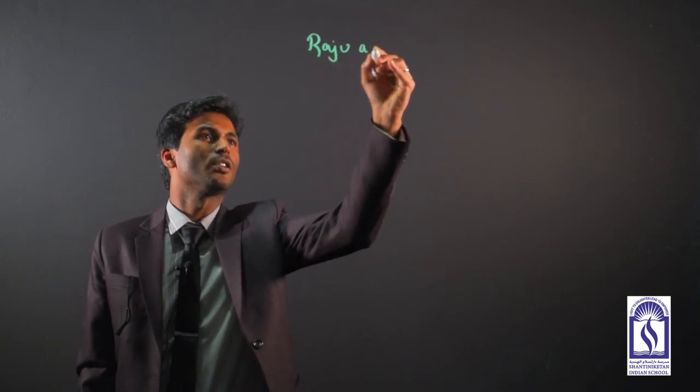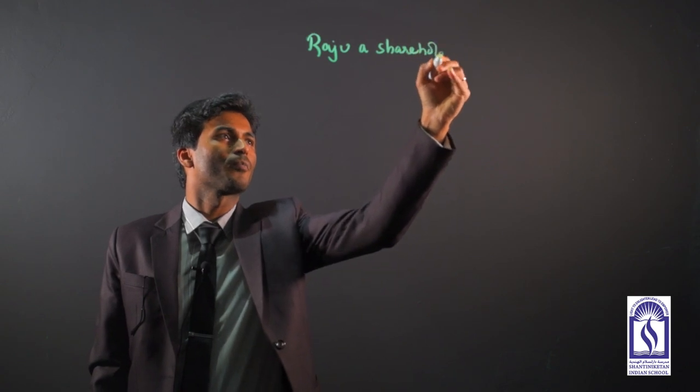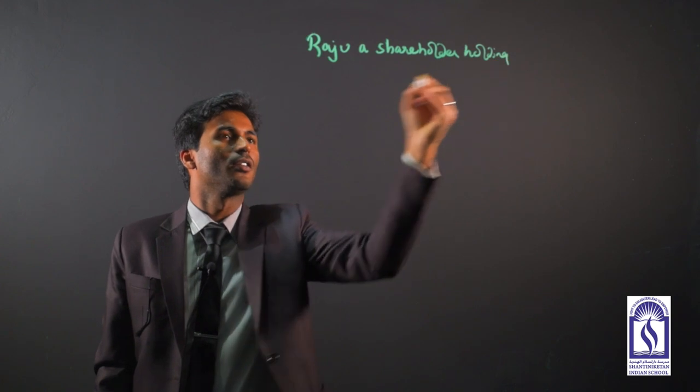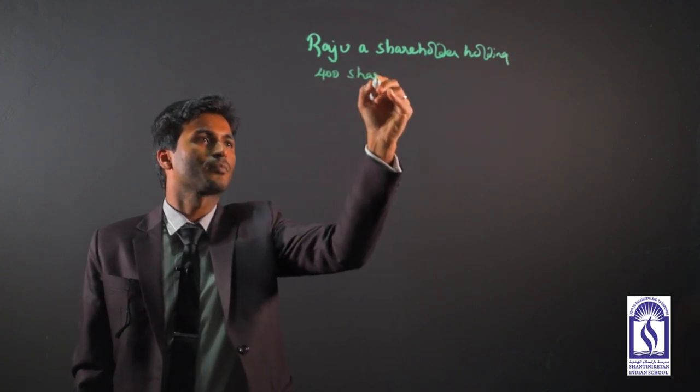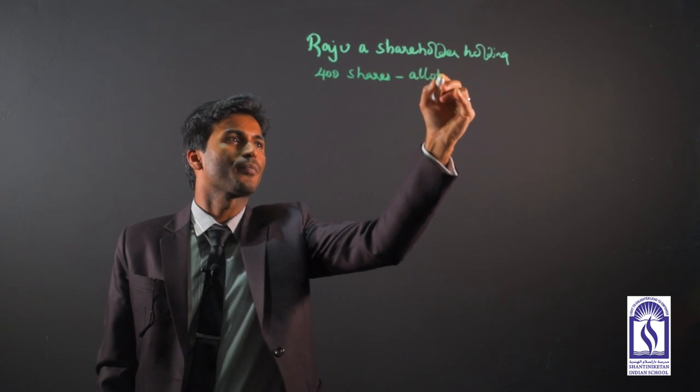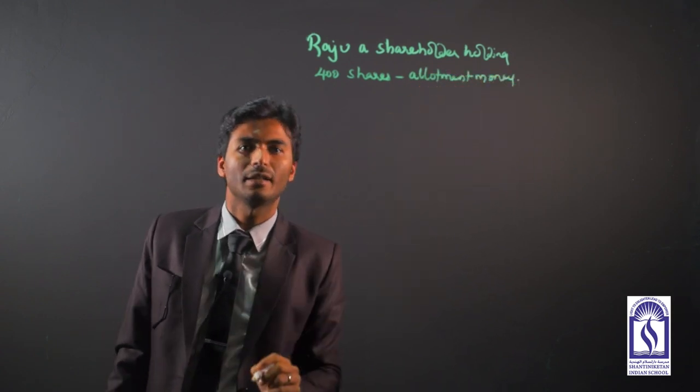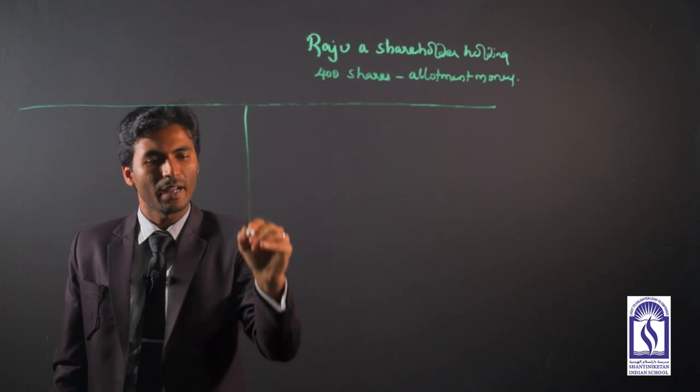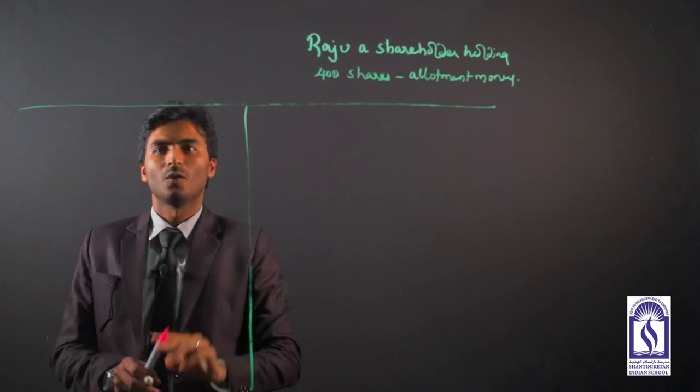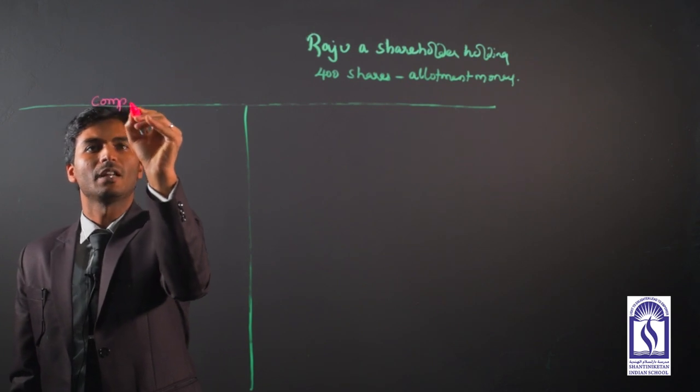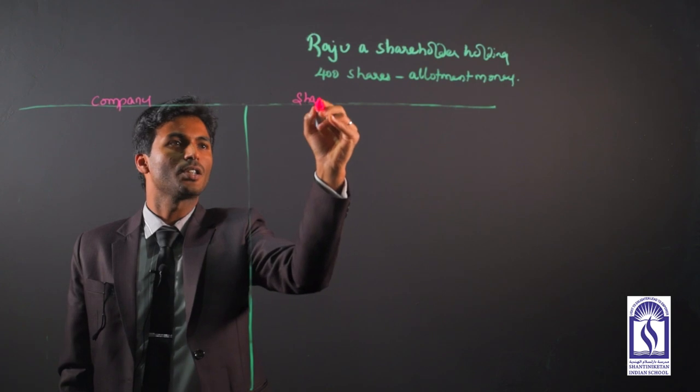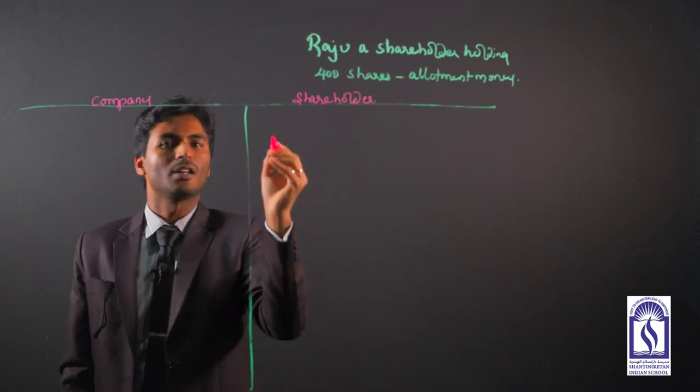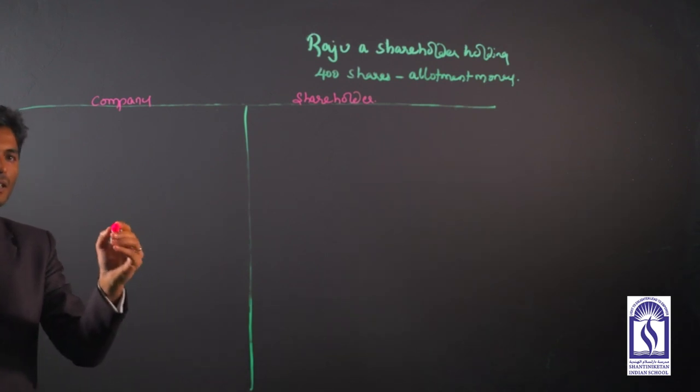Now the students have to analyze the question and underline this part whichever it is going to be. Example: Raju, a shareholder holding that is allotted 400 shares, didn't pay allotment money. Now the calculation will slightly differ for this case. We have to just divide this into two parts: one part for the company that we are going to analyze, and then another is for the shareholder. Remember, if you follow these steps you can solve any type of question.